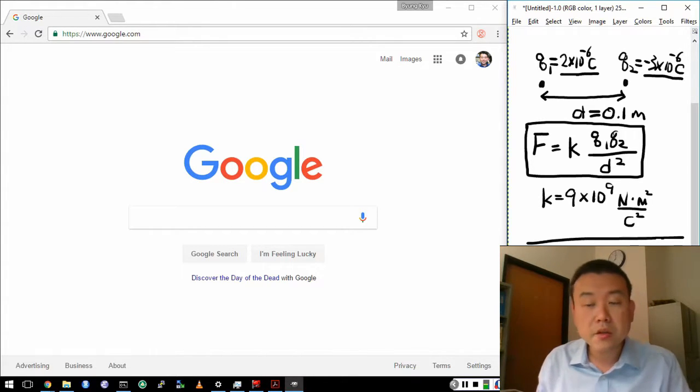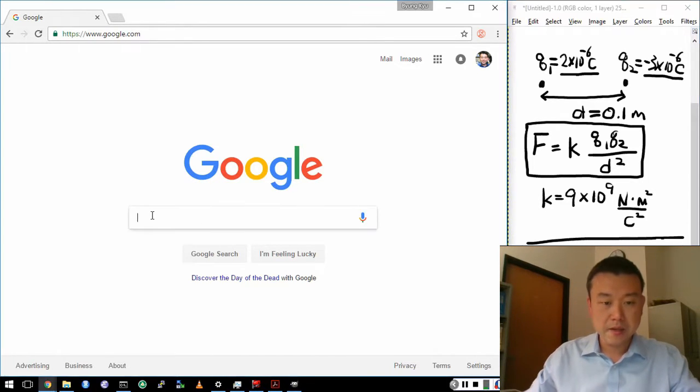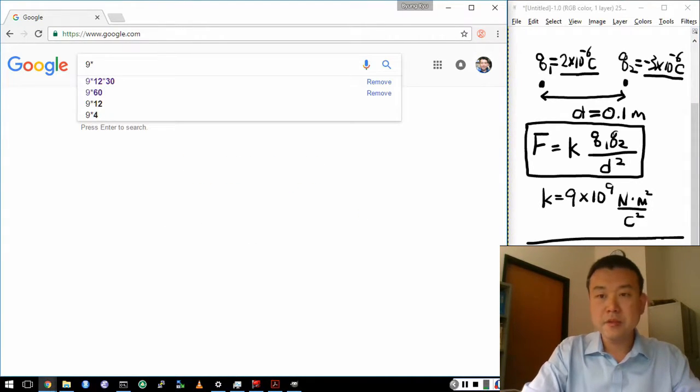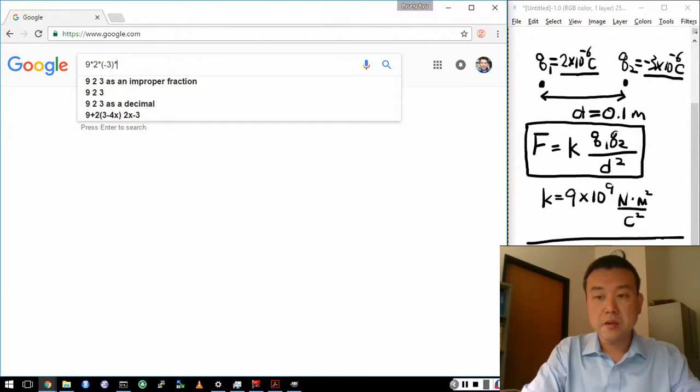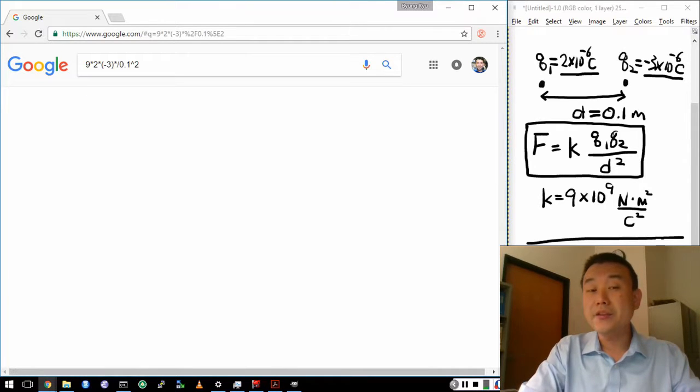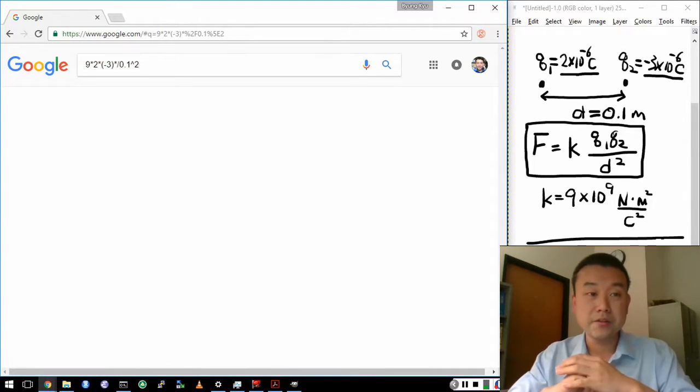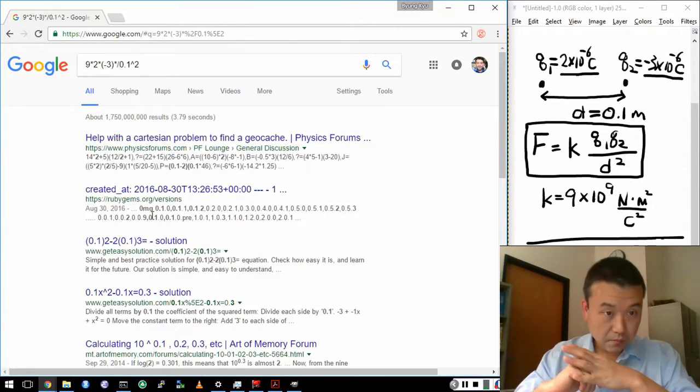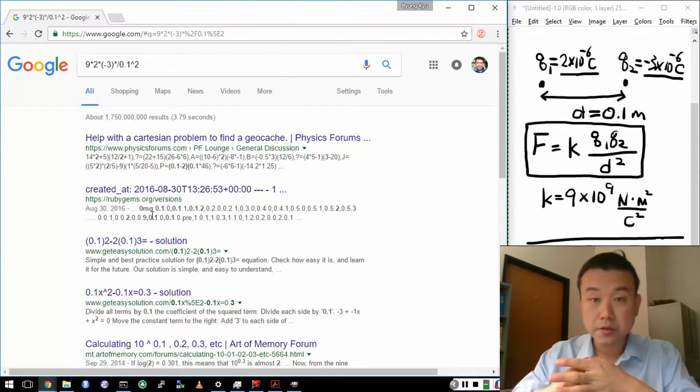So in calculating numbers like this, the challenge is that these are big numbers. And so if you do something like simply 9 times 2 times minus 3 divided by 0.1 squared, you missed out on all those factors of 10, powers of 10.